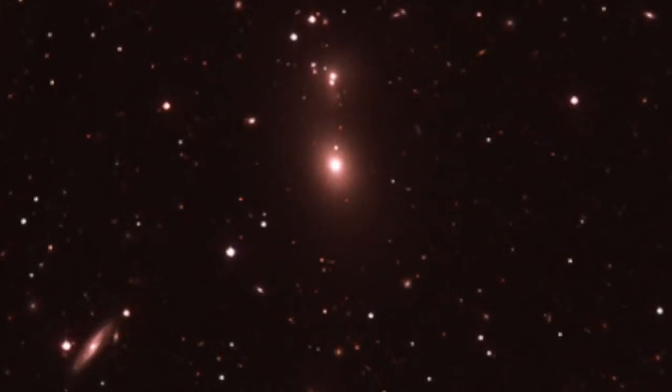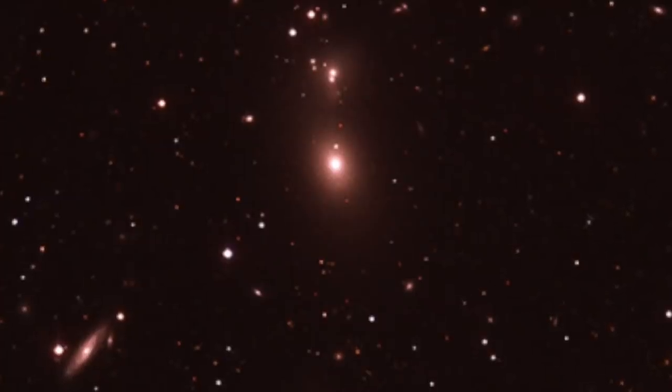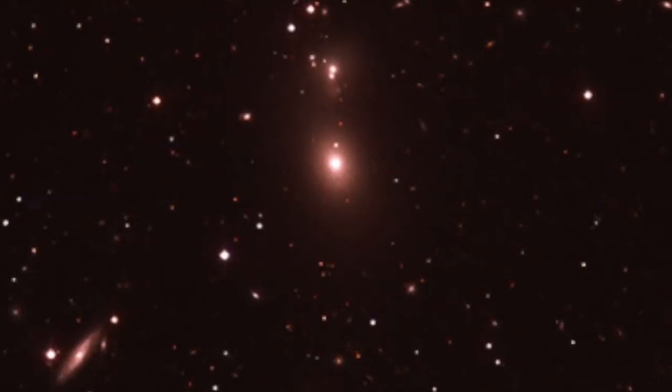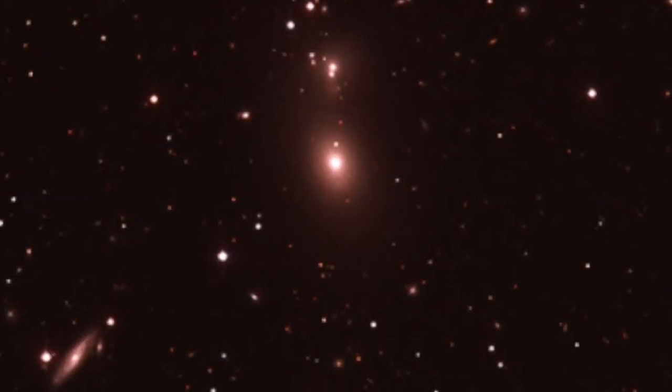The researchers estimate the total mass contained in NGC 6338 is around 100 trillion times the mass of our Sun. This significant heft, roughly 83% of which is in the form of dark matter, 16% in the form of hot gas, and 1% of stars, indicates the galaxy groups are destined to become a galaxy cluster in the future.